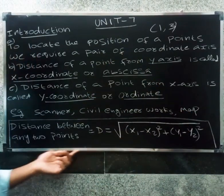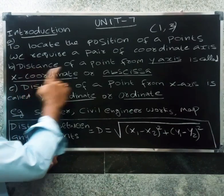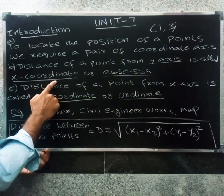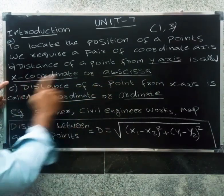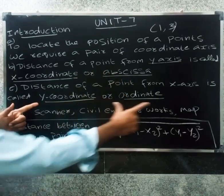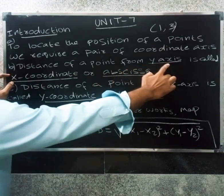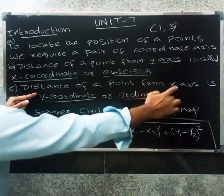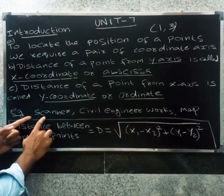In coordinate geometry, the distance of a point from the Y-axis is called the X-coordinate, also known as the abscissa. The distance of a point from the X-axis is called the Y-coordinate, also known as the ordinate. So the abscissa is the distance from the Y-axis, and the ordinate is the distance from the X-axis.